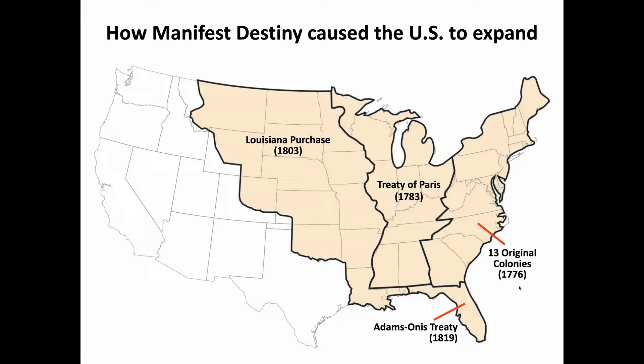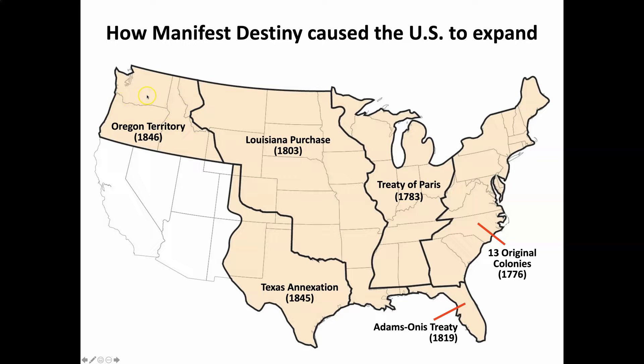Regarding the Texas Revolution and the Republic of Texas — the people of Texas wanted very badly to become part of the United States, and in 1845 Texas was annexed. The following year in 1846, we gained the Oregon Territory in a treaty with England. England had claimed the territory including Washington State, Oregon, and Idaho, while the U.S. claimed it was part of the Louisiana Purchase.